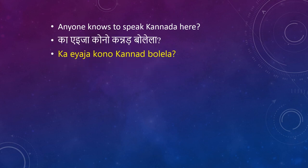Ka Eja Kono Kannada Bolela? Ka is a questioning technique. Eja means here. Kono means anybody. Kannada is one of the Indian languages. Bolela means able to speak.